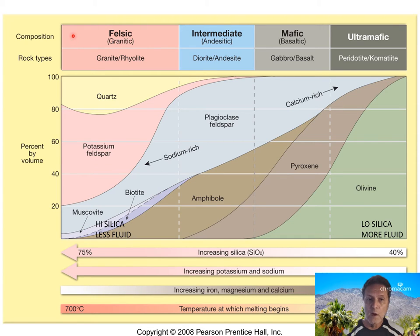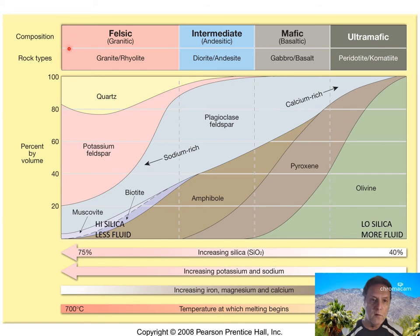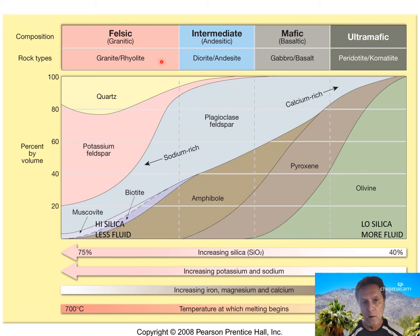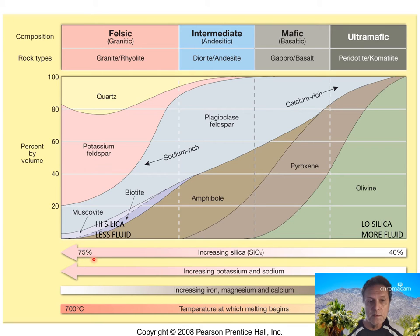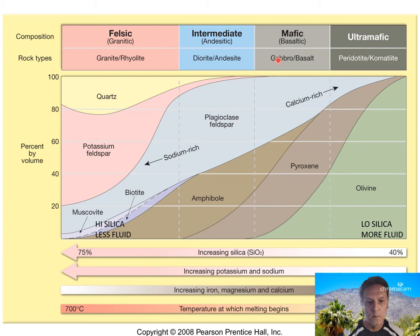On the left side we have felsic or granitic rocks — granite and rhyolite. Going from left to right, we go from rocks that contain more silica to rocks that contain less silica. Silica is silicon dioxide, the compound that forms quartz. Felsic rocks can contain as much as 75% silica; ultramafic rocks can contain as low as 40% silica. In between we have intermediate and mafic rock types.